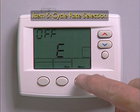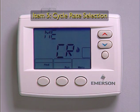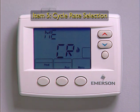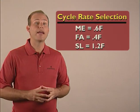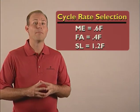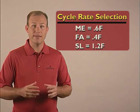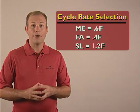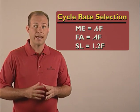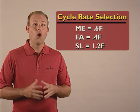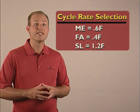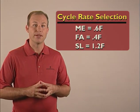Menu option 5 is the cycle rate selection option for the heat function with the default display of MECR and the flame icon. This setting cycles the heat at a medium rate of about 0.6 degrees Fahrenheit. To change it, press the up or down arrows to select fast, which cycles heat at 0.4 degrees, or slow, which cycles it at 1.2 degrees.